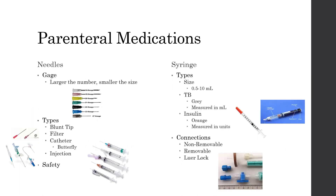Parenteral medications are administered into the body through needles or catheters. The needle selected depends on several factors. Regarding gauge, the larger the number, the smaller the size — so certain medications like blood require an 18 or 20 gauge, while others may benefit from a larger gauge number, meaning a smaller needle, to reduce trauma. A blunt tip needle and a filter needle are used to draw up medications. The filter needle contains a filter to remove any unwanted particles — for example, it would be used when drawing up medication from an ampoule.